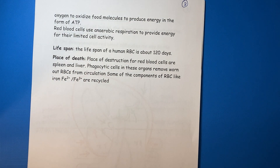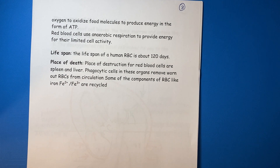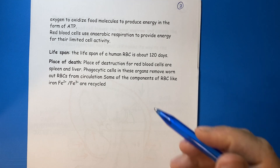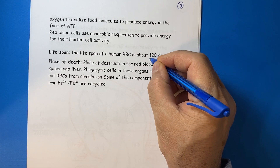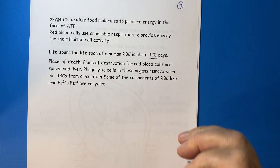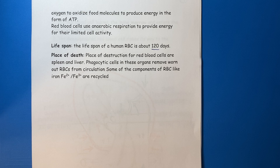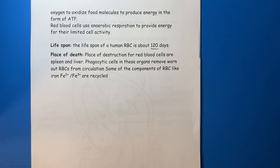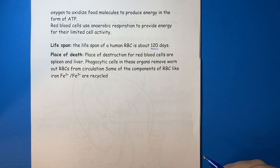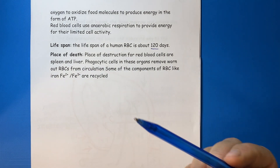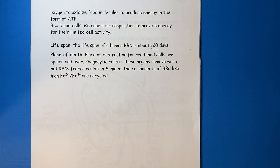Lifespan: the lifespan of a red blood cell is about 120 days. Place of death: the place of destruction for red blood cells involves two organs — the spleen and liver.